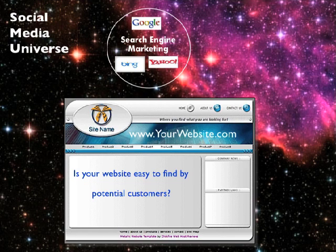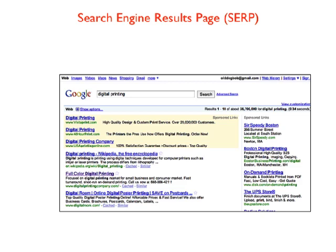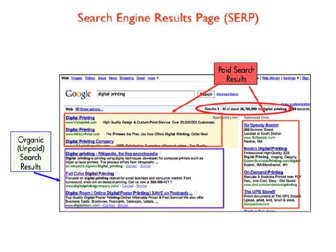Let's start with search engine marketing. The real purpose is to enable your customers or prospects to find you online — specifically on your website — using tools like Google, Bing, and Yahoo. The process of making your website easy to find is known as search engine optimization, or SEO — increasing the volume or quality of traffic to a webpage from search engines via natural or organic search results. When I entered the words 'digital printing,' the search engine returned paid sponsored links at the top and sides, and organic unpaid results on the left.